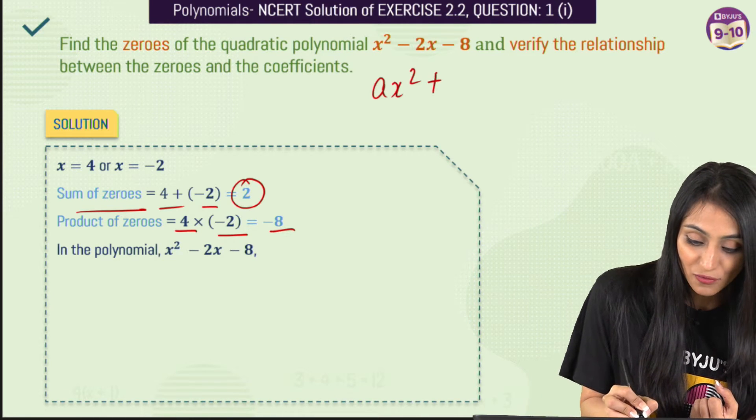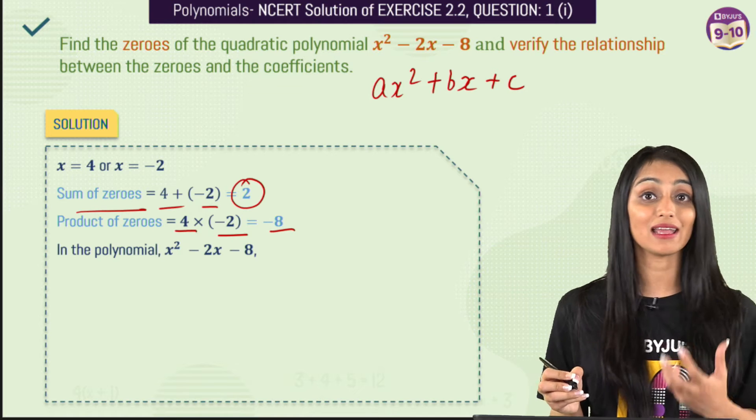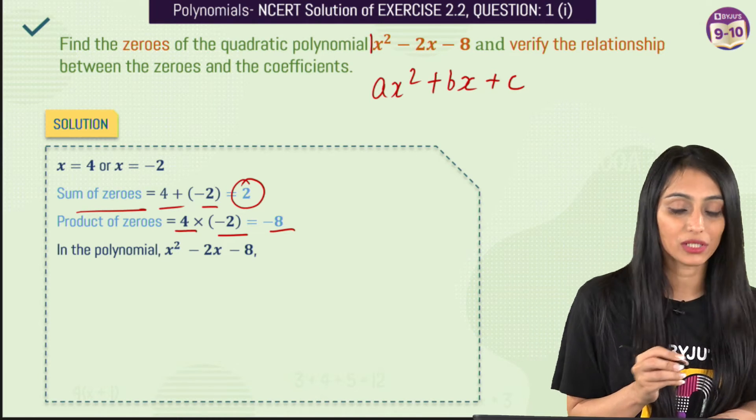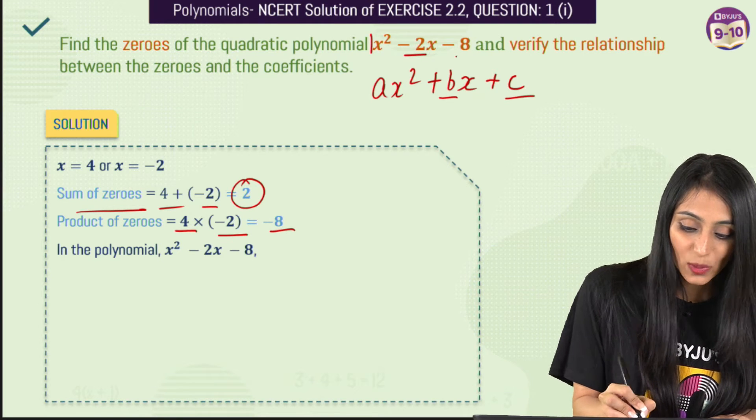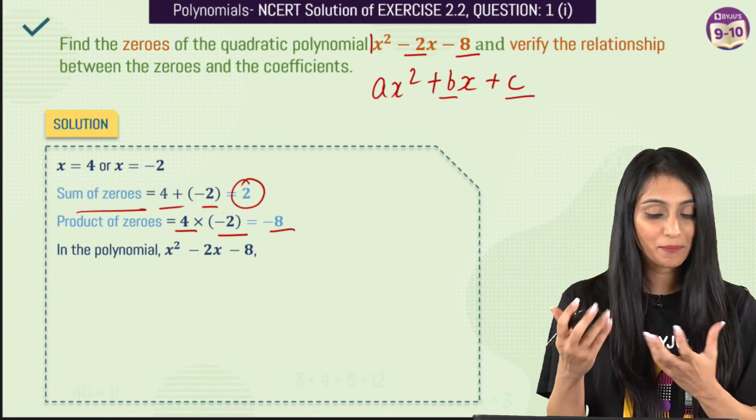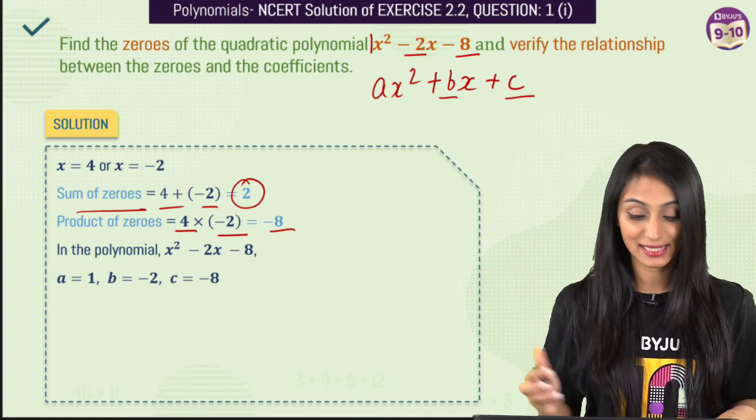Now if you talk about this polynomial, if I compare it with the general form of the quadratic polynomial that is ax squared plus bx plus c, so from here nothing is written. So a is going to be 1, b is going to be minus 2 and c is going to be minus 8. We are just comparing it. So these are the values for a, b and c.